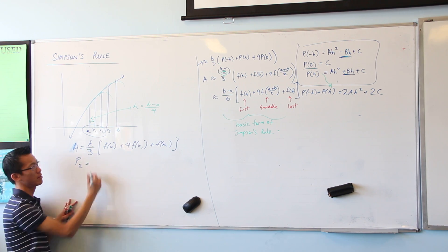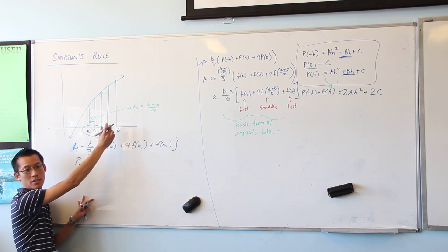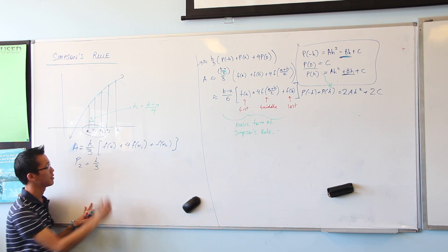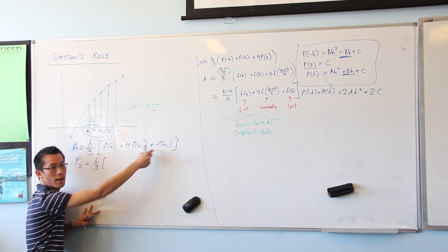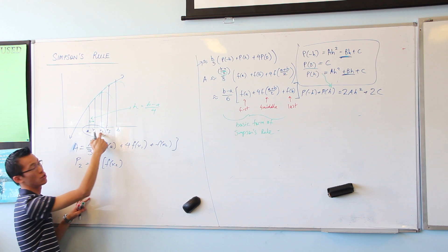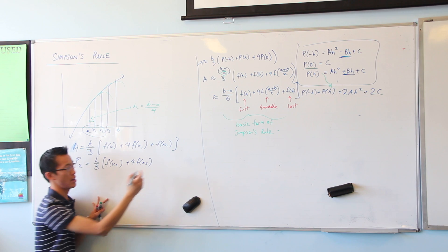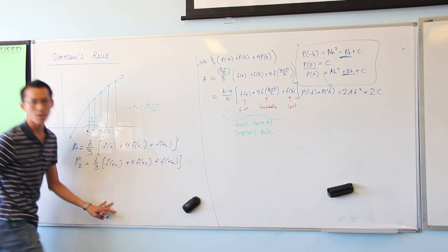So when I do my second one, what's going to be the same and what's going to be different? Well, the perpendicular height is the same, because the subintervals are all the same width. But now when I go first, four of the middle, and last, the values have changed. So here's my first now, X2. And then four of the middle one, which is now X3. And then one of the last one, which is X4.